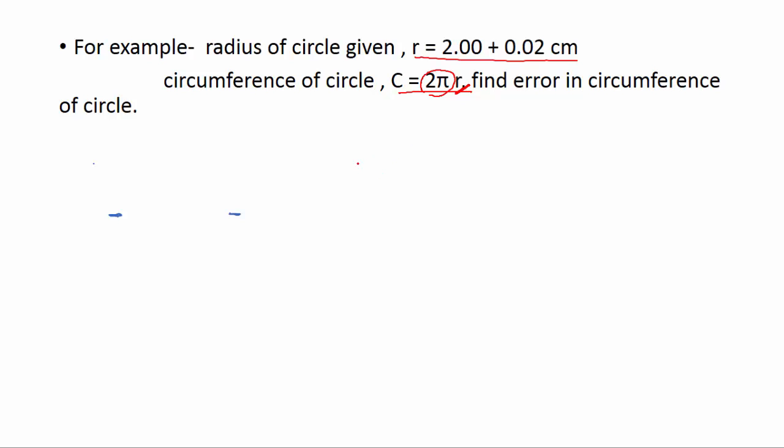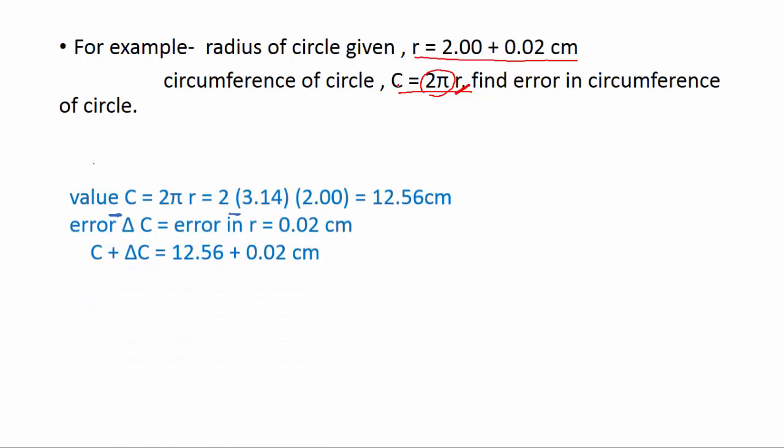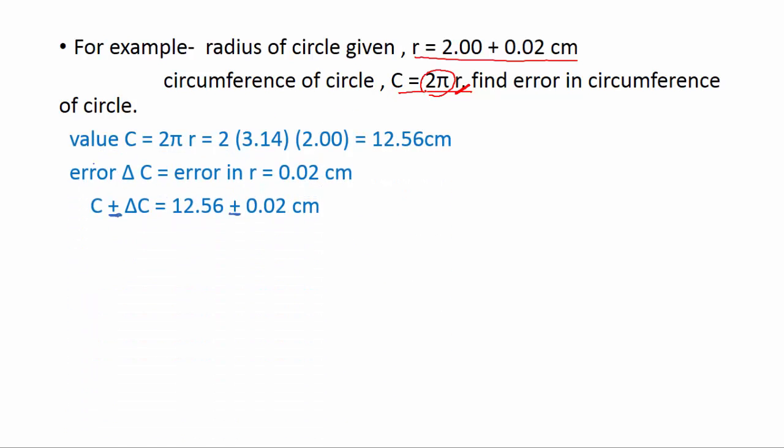Then we have to find error in circumference. First we will find value of circumference, for that we will use 2πr formula. We got the value of circumference 12.56 cm. And then error in circumference would be the same as error in r, because 2π has no error. So we will get the final answer c plus minus delta c, that means value plus minus error.